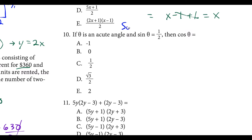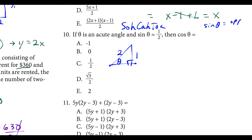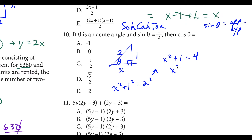Question ten — it really helps to know SOH-CAH-TOA. When labeling a right triangle with the sine function, we label the opposite side and the hypotenuse. Angle theta is over here, opposite of theta is 1, and the hypotenuse is 2. Sine theta equals the opposite over the hypotenuse. To find the missing side x, we use the Pythagorean theorem: x squared plus 1 squared equals 2 squared, so x squared equals 3, and x equals square root 3.